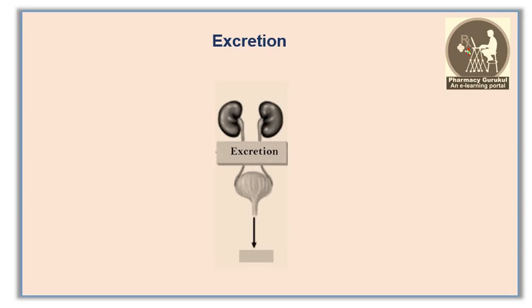The last but not least pathway of pharmacokinetics is excretion. Excretion is the process by which the metabolized compound is eliminated or removed from the body. Most drug excretion occurs via urine or feces; other excretion methods include through the lungs or through the skin.